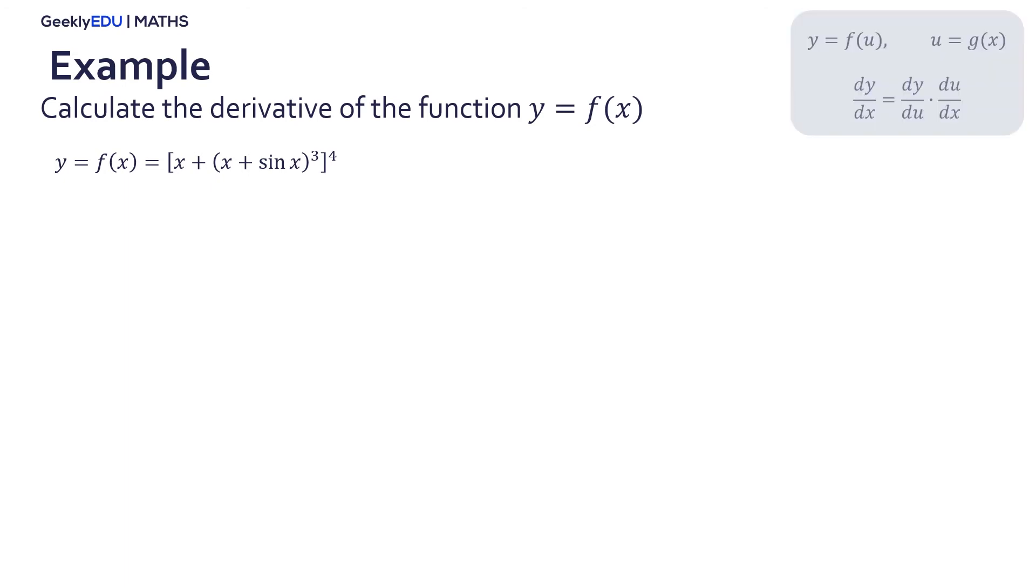First, we are going to identify the function u and rewrite the y function with the change of variable. Using the chain rule, we substitute those terms. The first derivative is solved by using the power rule. And then we have to substitute the expression equal to u.